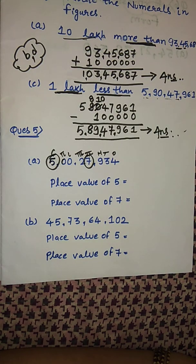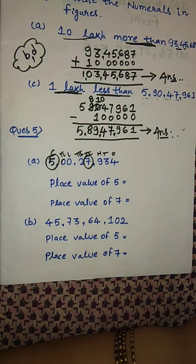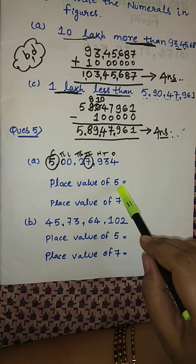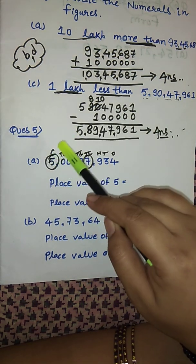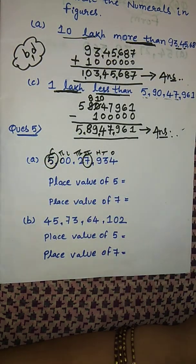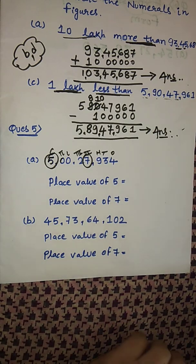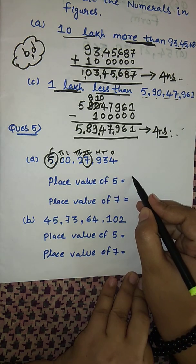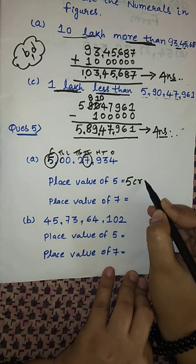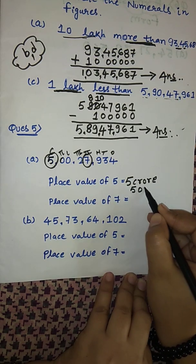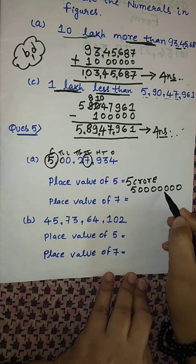How do we find the place value of a digit? Whichever digit's place value we need to find, we multiply that digit by the value of the place where it is situated. That is the way to find out the place value. Here 5 is at the crores place, so the place value of 5 is 5 crores. When writing your answer, write it in both forms — in words and in figures.